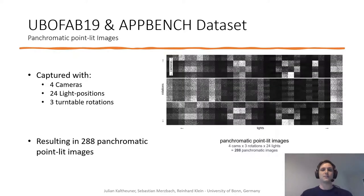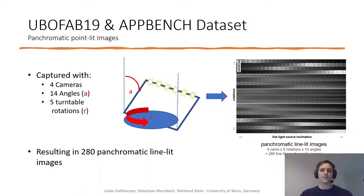For the panchromatic point-lit images, the scanner took 4 different camera positions, 24 light positions, and 3 turntable rotations to create 288 panchromatic point-lit images per fabric. The 280 line-lit images for every material are created with the help of 4 cameras, 14 angle configurations, and 5 turntable rotations.